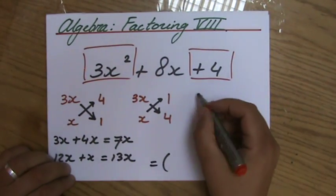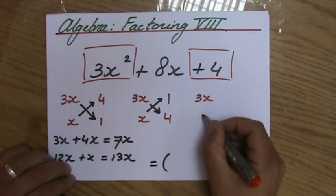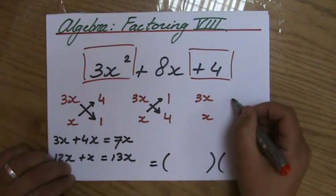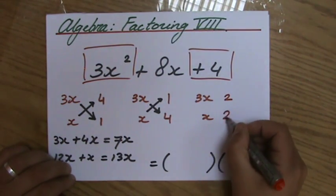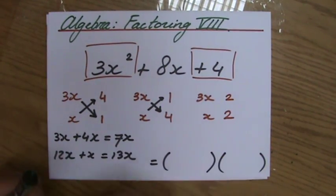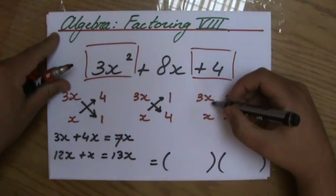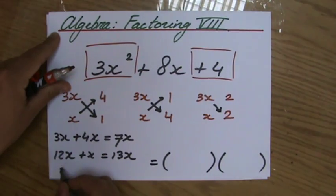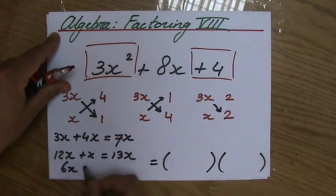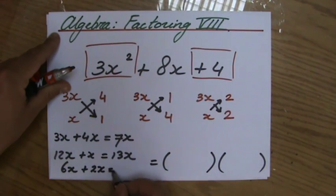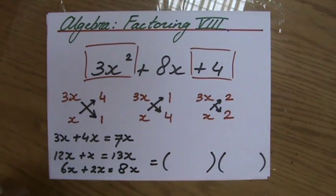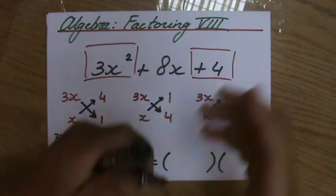We just have to continue — we have to be perseverant. What times what else is 4? 2 times 2 is 4. And I continue — cross multiply. So 3x times 2 is 6x, and x times 2 is 2x. And that is indeed 8x — that's my middle term. I have cracked the code. The vault is opening now.